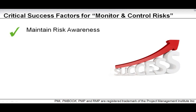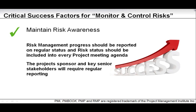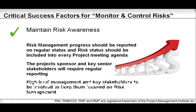Lastly, maintain risk awareness. Risk management progress should be reported on a regular basis, and risk status should be included in every project meeting agenda. Project sponsors and key senior stakeholders will require regular reporting, perhaps outside of project meetings. If they don't, there is something wrong — high-level management and key stakeholders must be involved to keep them focused on risk management. Without their support, the monitor and control risk process will not be effective.